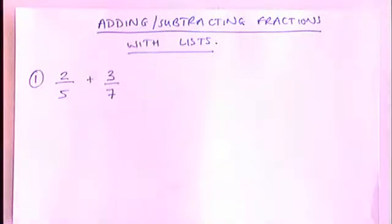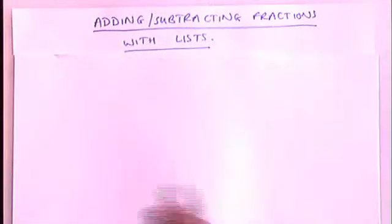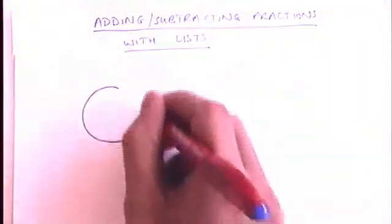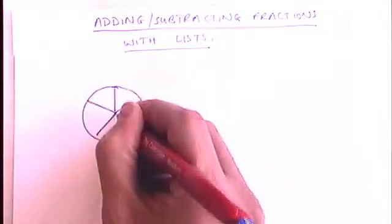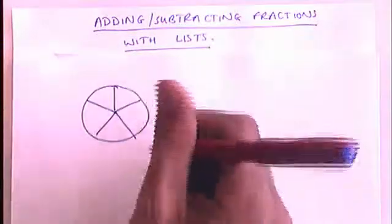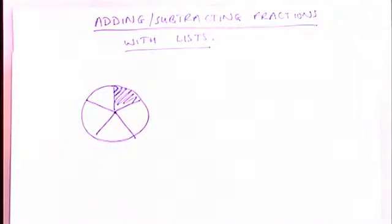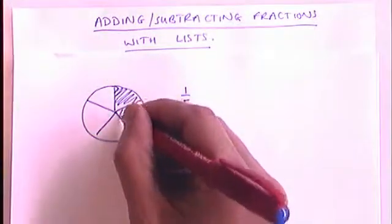So the basic problem is this. I'm going to cover up that question quickly and just give you a simpler question. Let's have a look at a circle, and I split it into fifths, five bits, so each bit is one fifth. And I shade in one fifth, that's that much.